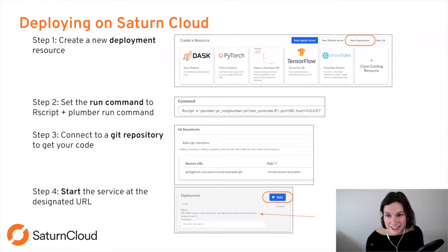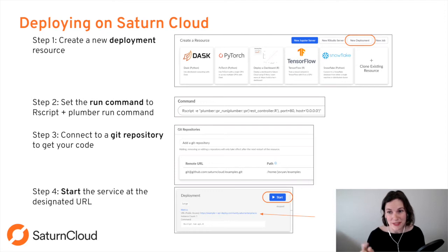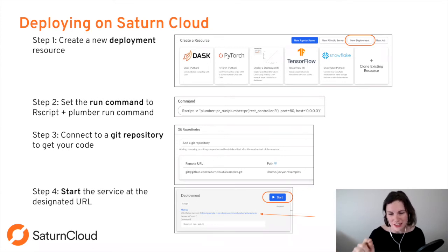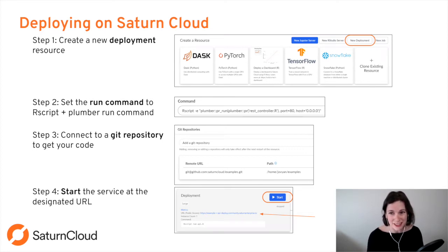On Saturn Cloud, we have a deployment button that spins up an image, you give it the Plumber command pointing to your REST controller file, hit start, connect it to your GitHub code, and it runs for you. You don't have to use Saturn Cloud — many of those other solutions are really good too.